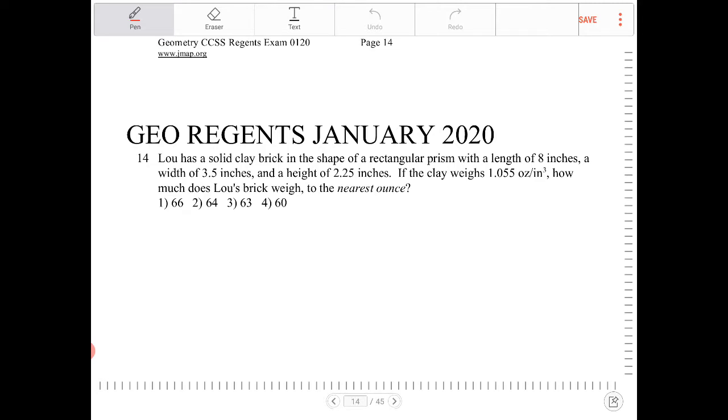Lou has a rectangular brick, and the way in which you draw a rectangular prism is you draw two rectangles about the same size and then you connect the vertices there. And voila, you have yourself a rectangular prism.